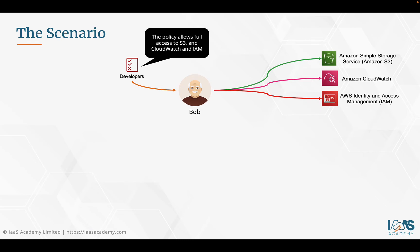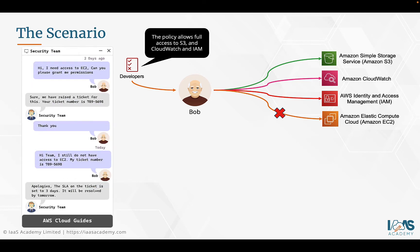It so happens that Bob decides he needs access to Amazon EC2 for a particular personal project. Because his policy doesn't grant him that level of access, any attempts to access EC2 are denied. Bob really does need to get onto EC2 and work on this project, so he decides to make a request to the security team to give him that level of access. Here's a chat extract of his communications with the security team.